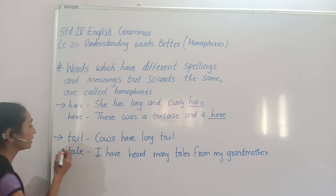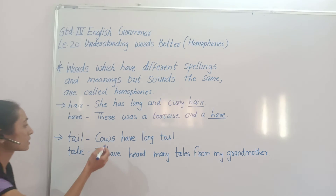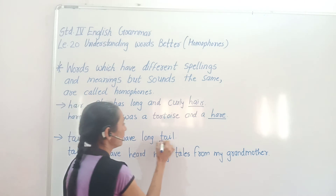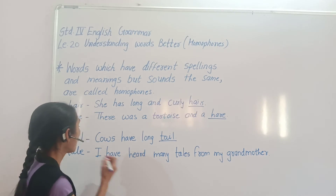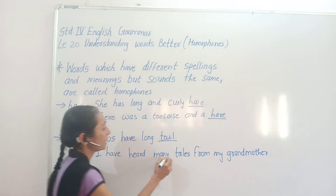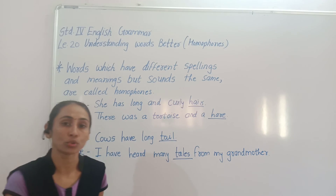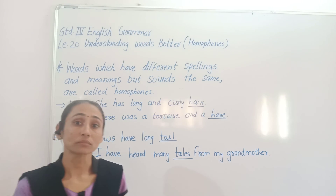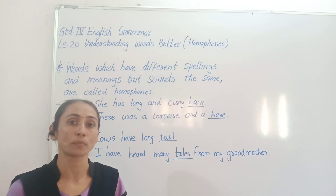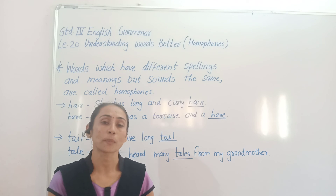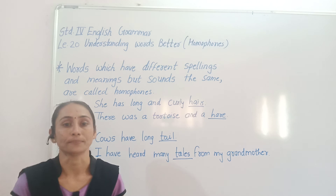Next example: 'tail' — t-a-i-l — aur 'tale' — t-a-l-e. For example: 'Cows have a long tail.' Yahan pe 'tail' ka matlab hoga cow ki jo poonch hoti hai. Next: 'I have heard many tales from my friend.' Yahan pe 'tales' ka matlab hota hai story. Toh yahan pe bhi do words hain jiske sound same hain, but unka meaning aur spelling different hai. Toh aise words ko hum homophones kehte hain. Thank you.